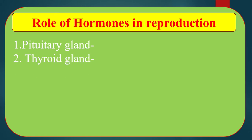Number 2: Thyroid gland. The thyroid gland secretes T3, T4, etc., and they take part in reproduction. Number 3: Adrenal gland. The adrenal gland secretes adrenaline hormone, and adrenaline hormone helps in reproduction.